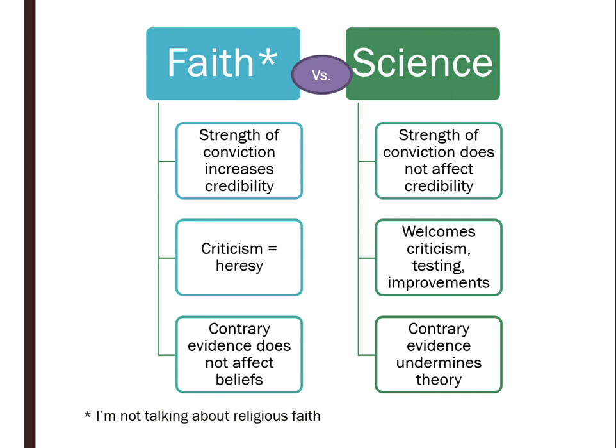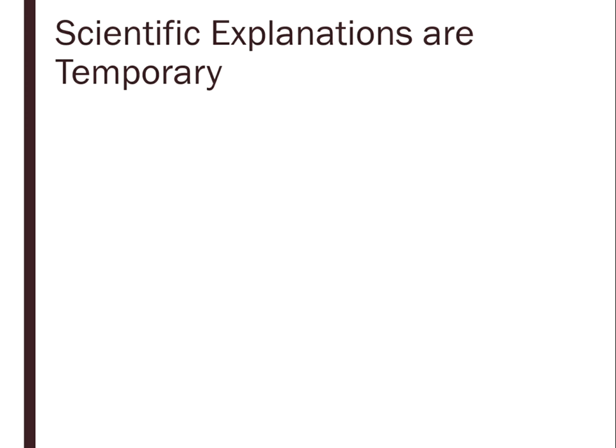Scientific explanations are temporary. There are reasons scientists talk in such careful tones — we say 'this data suggests' rather than 'this data proves.' We know that our explanations may be overturned in the future. To illustrate this, let's go through the history of one aspect of psychology: the effort to explain how the brain actually causes behaviors, language, or other observable outcomes.